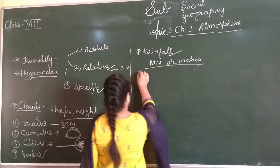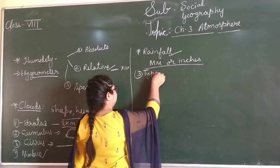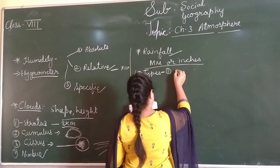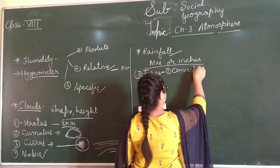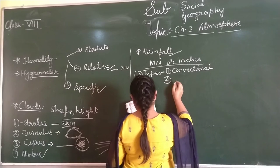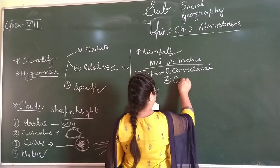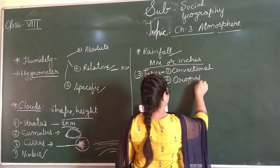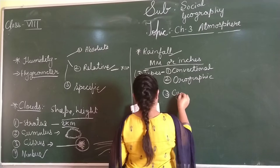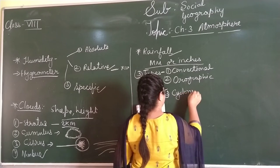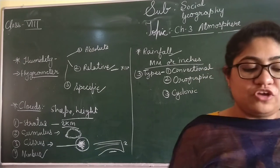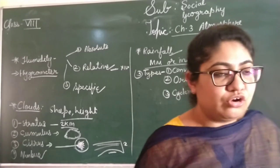Rainfall is also of three types. The first one is conventional rainfall. The second is orographic rainfall. And the third is cyclonic rainfall. There are three types of rainfall.